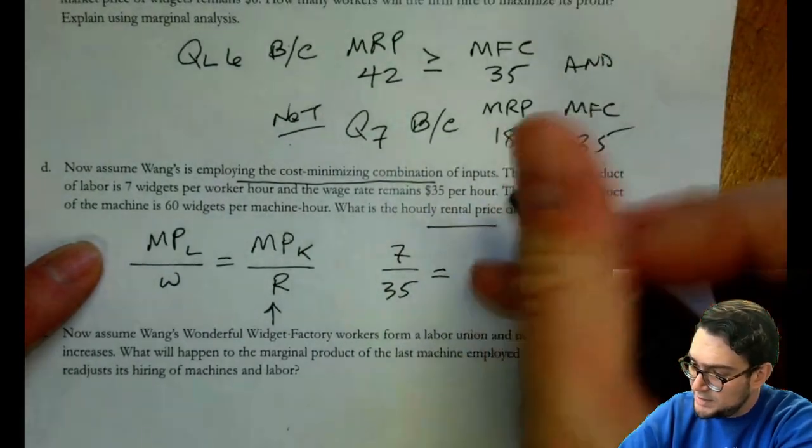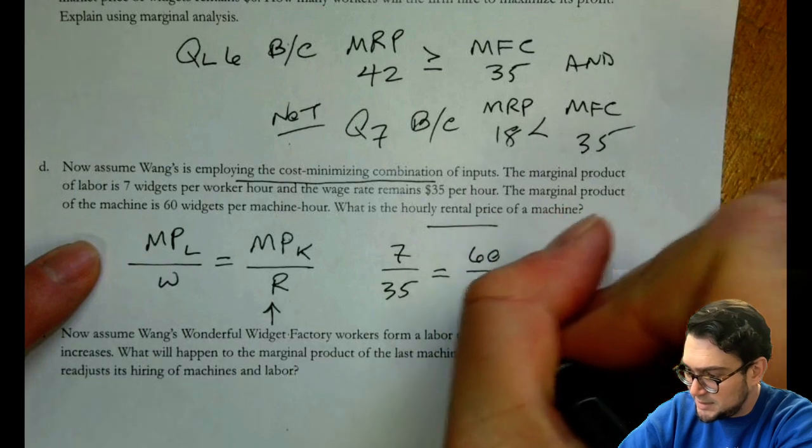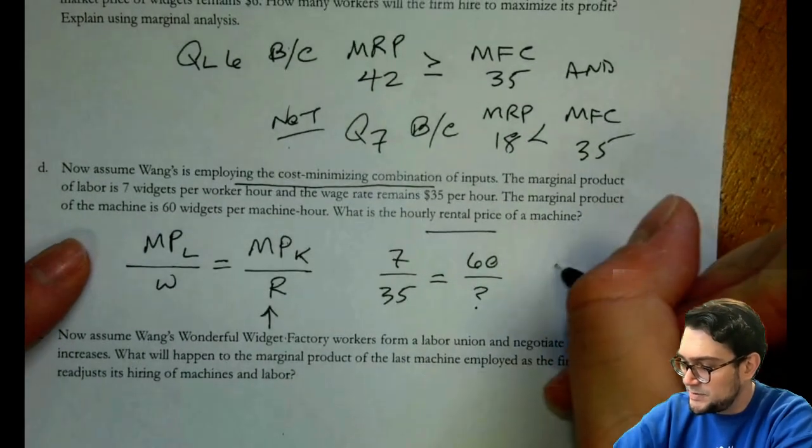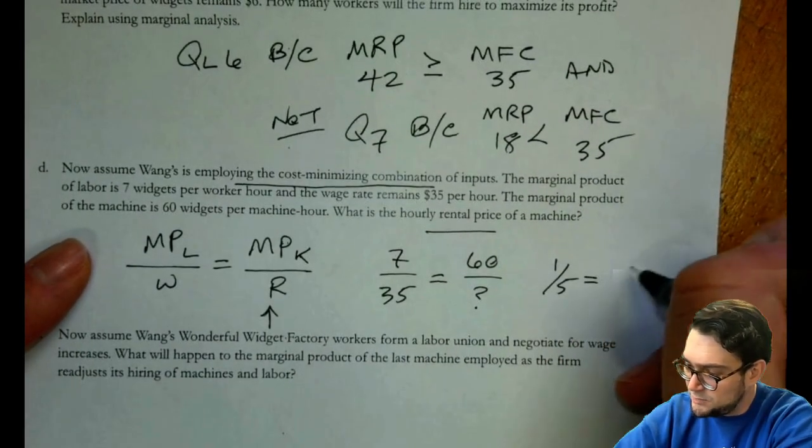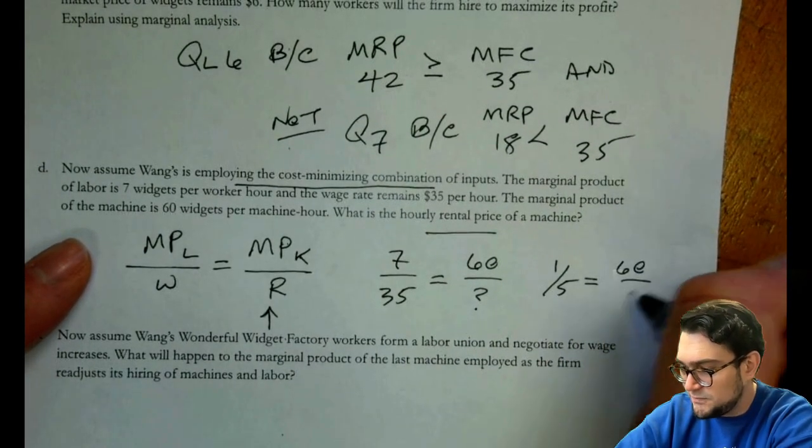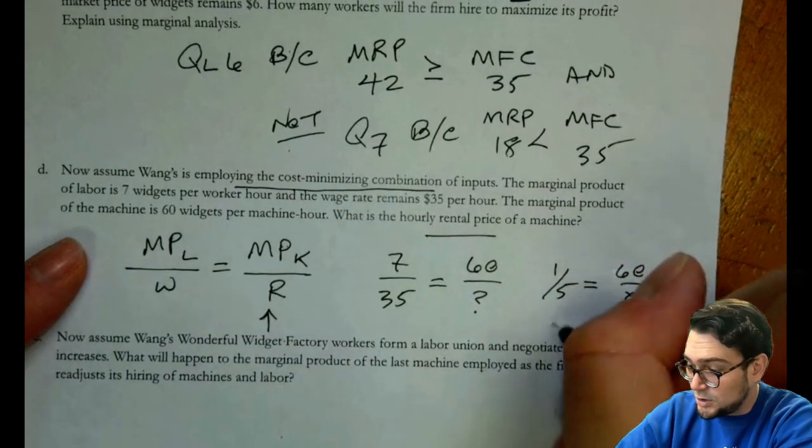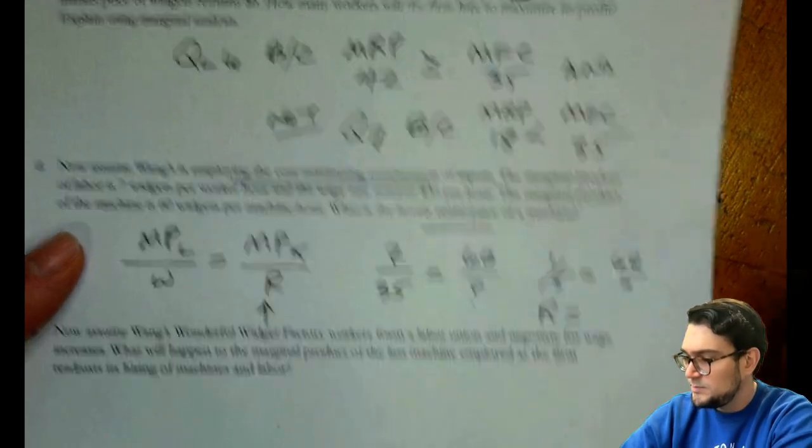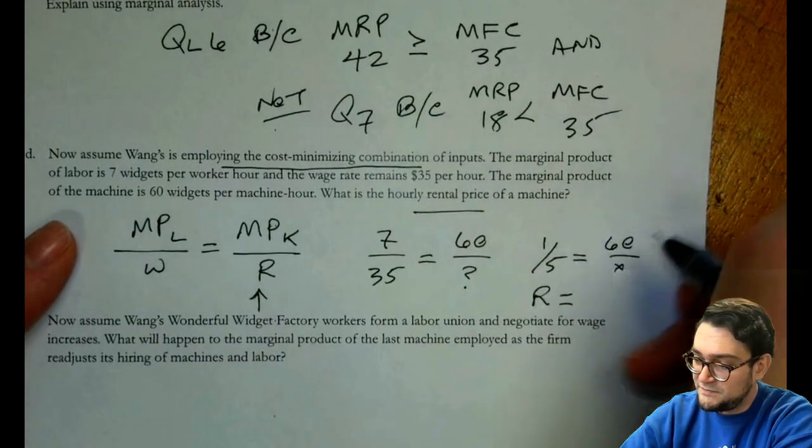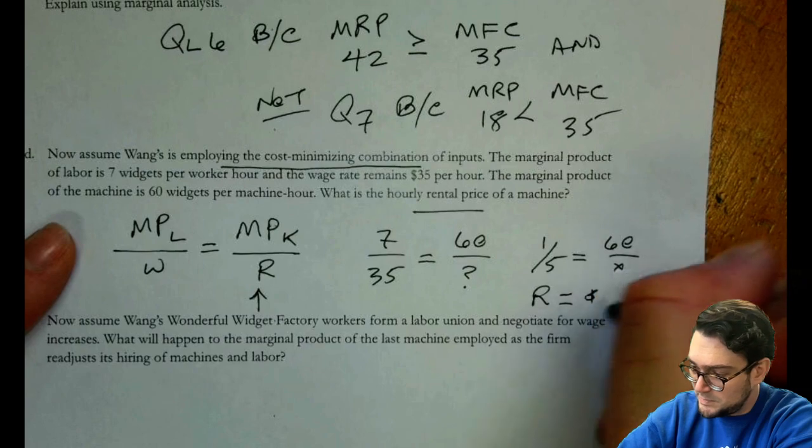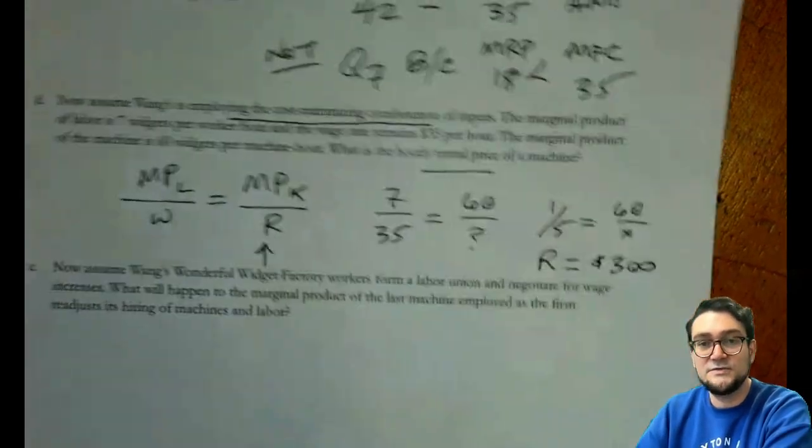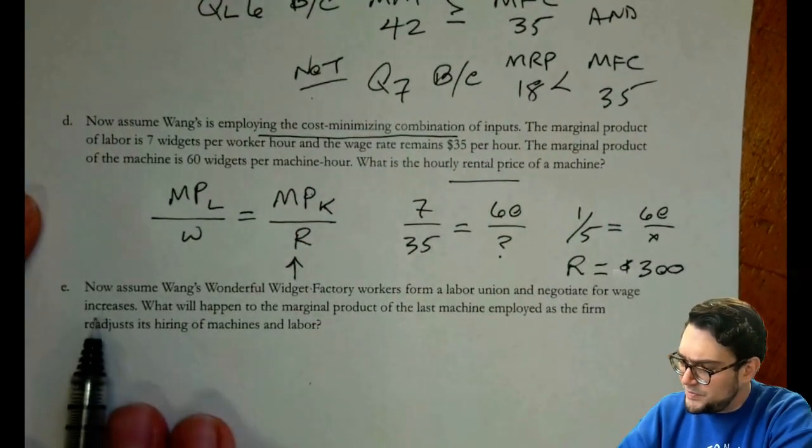So if I know that the marginal product of labor was seven and we paid them 35, that must be equal to 60 over something. And so this is saying one fifth is equal to 60 over X, or just R. So R must be equal to five times six is 300. So I have to be paying $300 for a machine.